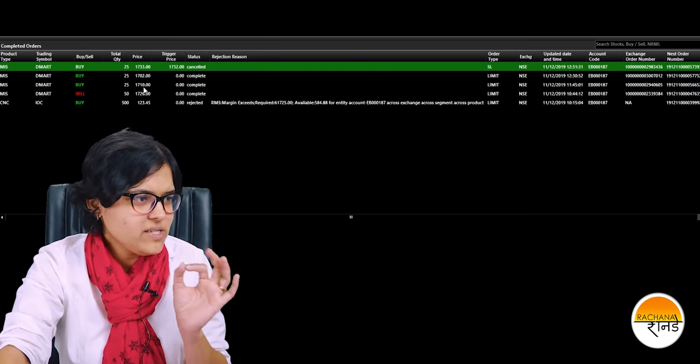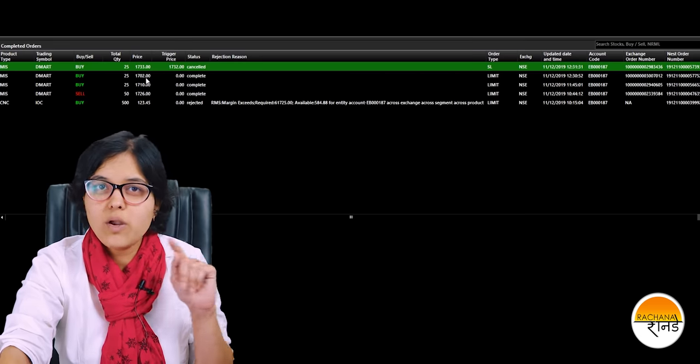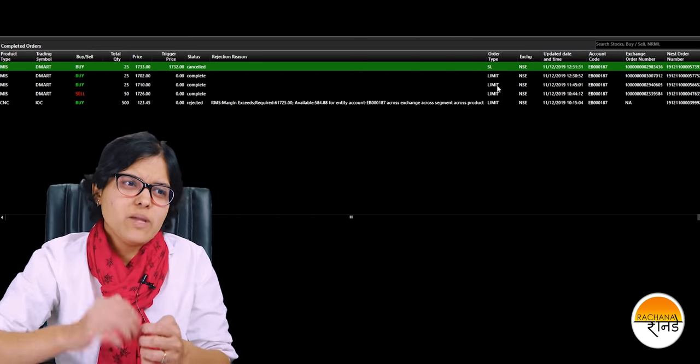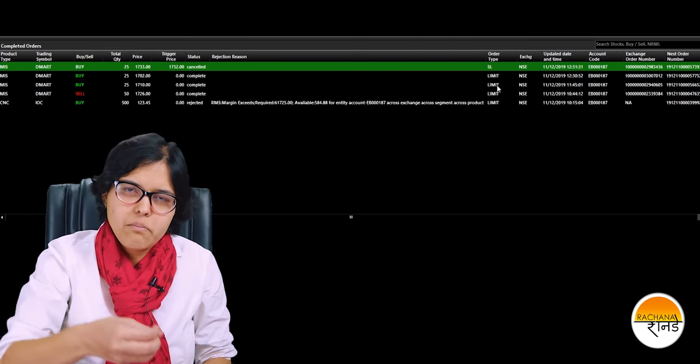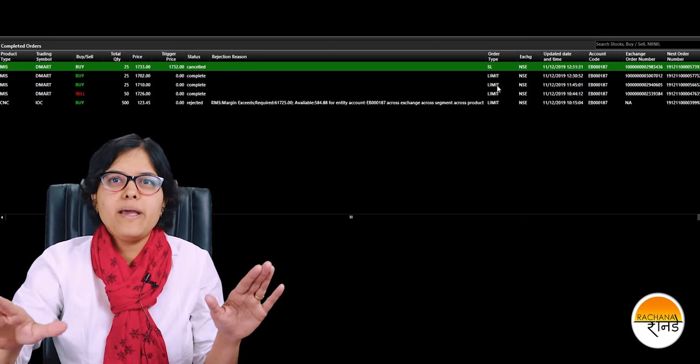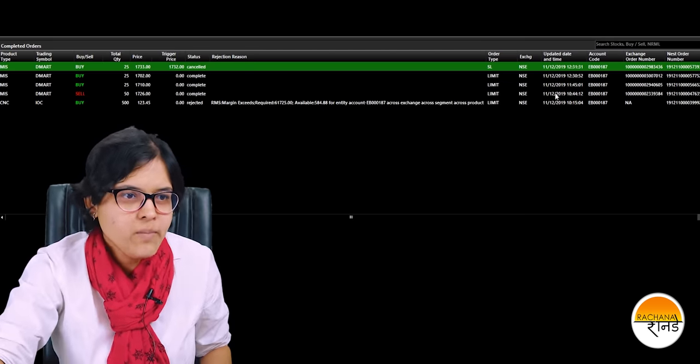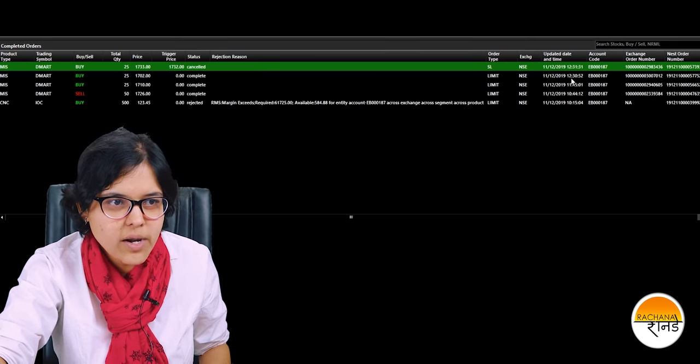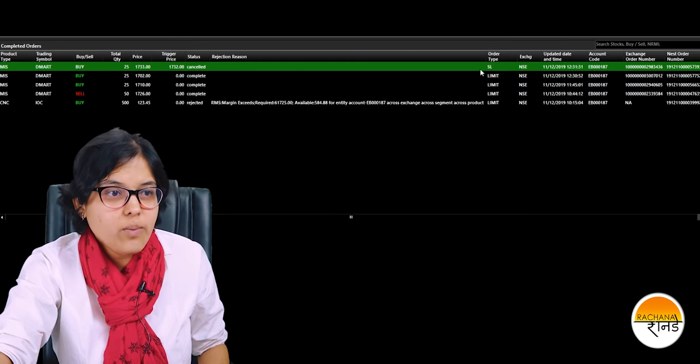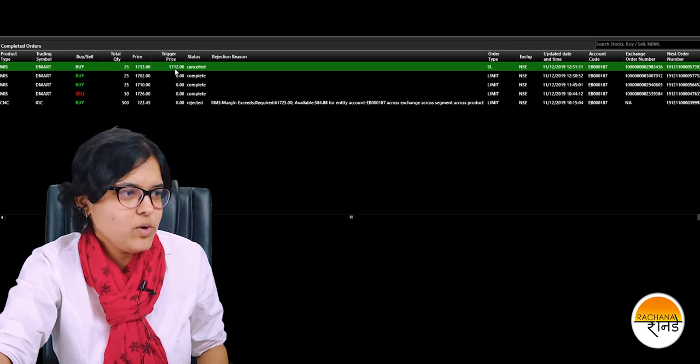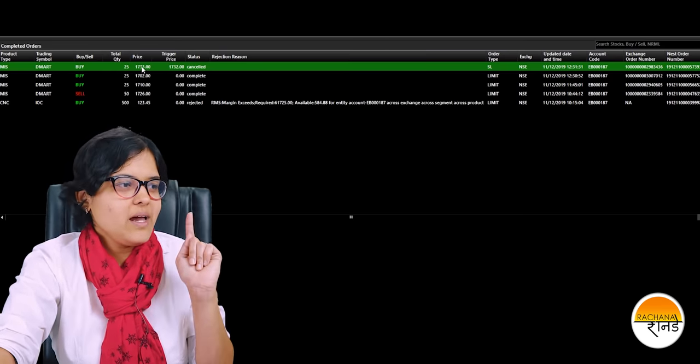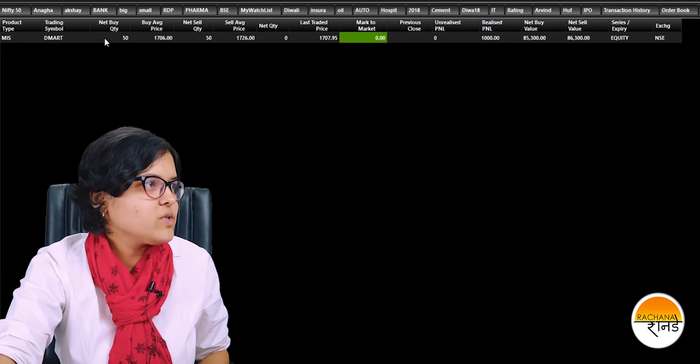Now these two orders at 1710 and 1702, these were not market orders. These were limit orders. So I'd originally put this into my system that whenever stock goes down to 1710, buy half quantity, square off half quantity. And when it goes down to 1702, buy the pending quantity, square off the pending quantity. So this trade got triggered at 1145. This trade got triggered at 1230. Here you can also see that there is a stop loss order. This stop loss order I had put at 1732. I sold it at 1726. Had it climbed up, then I said that at 1733, book my losses.